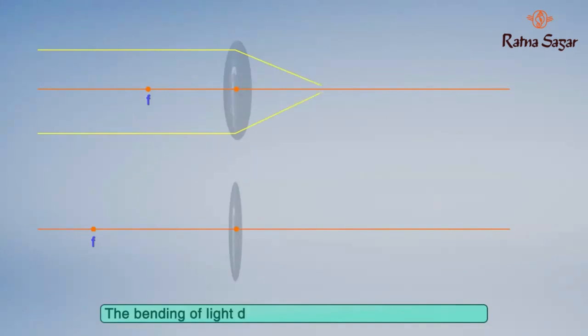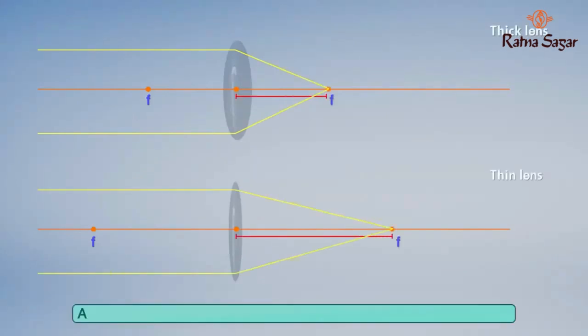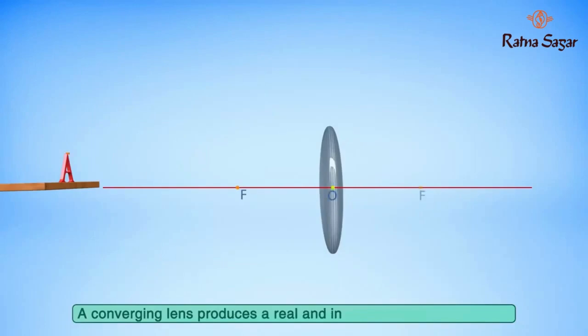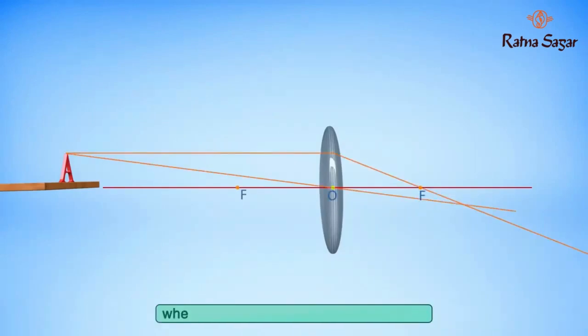The bending of light depends on the thickness of the lens. A converging lens produces a real and inverted image of an object when it is located outside the focal point.